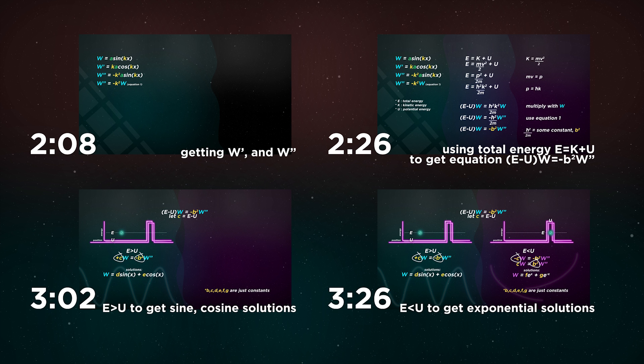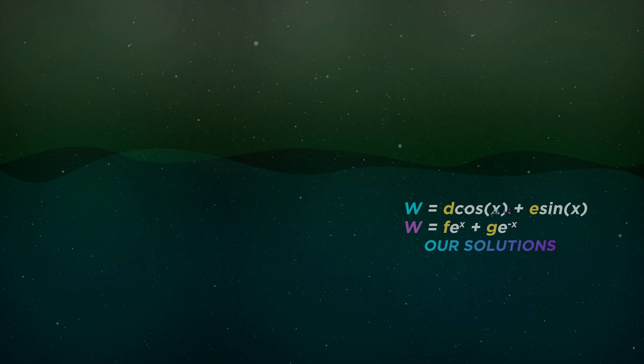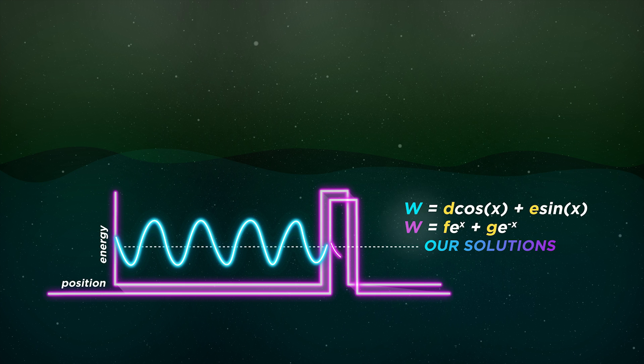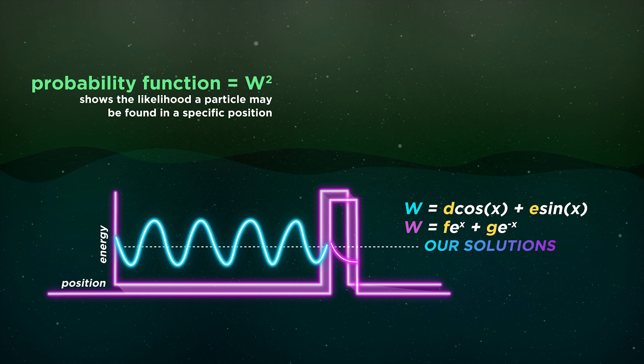I trust that you got all that, if not go back. It's always better the second time around. Now, the solutions we got are what we use to get something more concrete: the probability functions. These are just functions that tell us how likely we are to find the particle in specific positions.